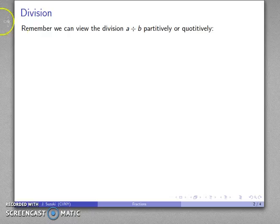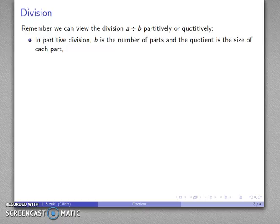What did we do with whole numbers? Remember that there's two ways of looking at the division A divided by B. We can either view it partitively or quotitively. In a partitive division, the divisor B is the number of parts and the quotient is the size of each part.